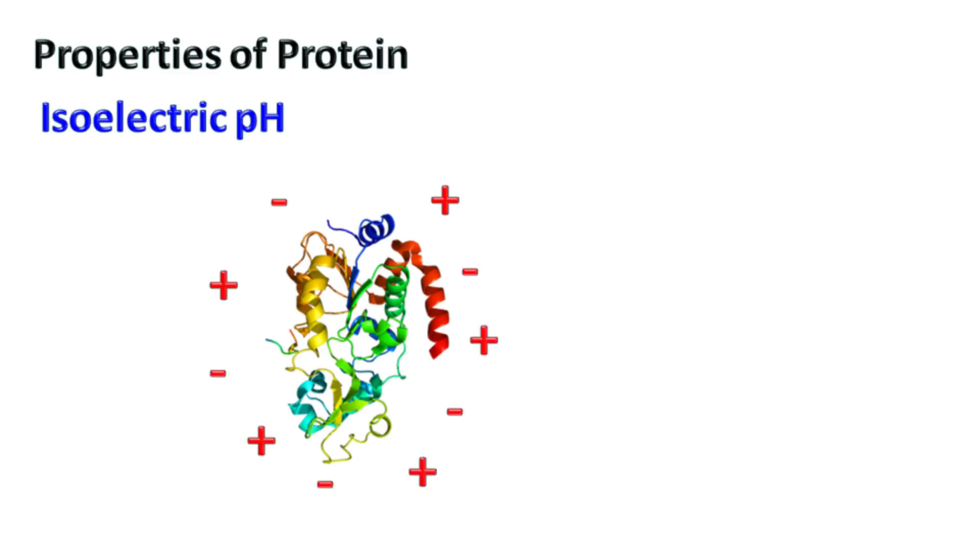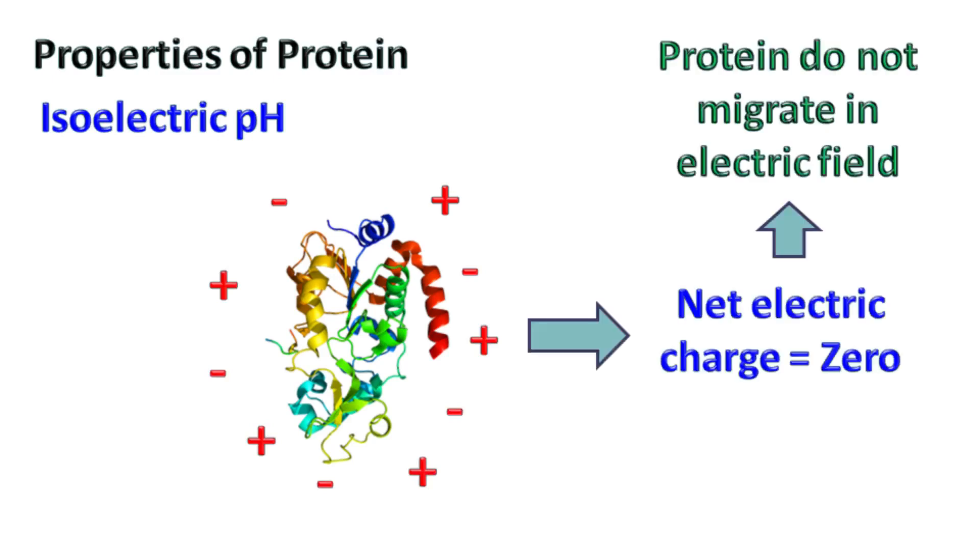At this pH, the net charge present on the protein is zero. Hence, such protein fails to migrate in an electric field.